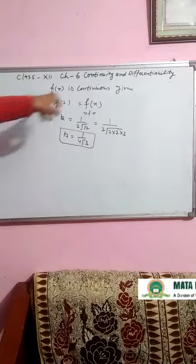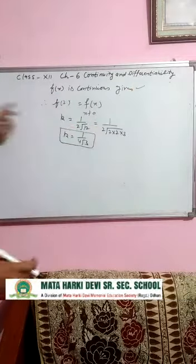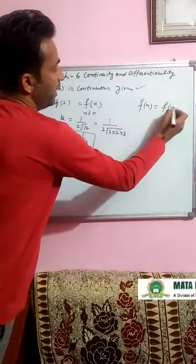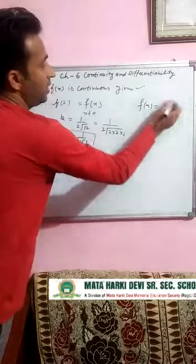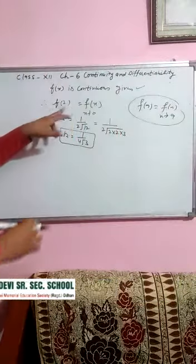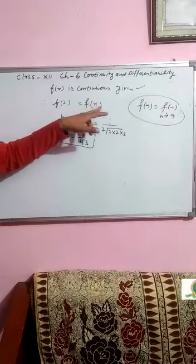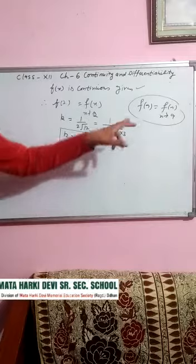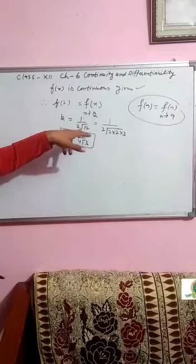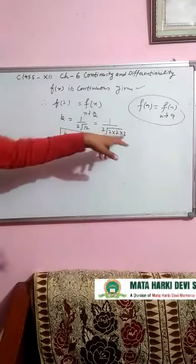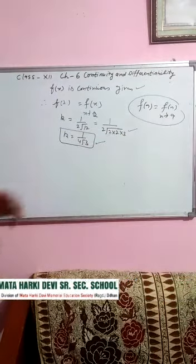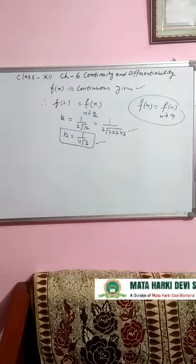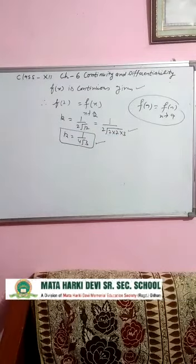Function aapka continuous given hai, toh continuity ki condition hogi: f(a) is equal to limit x tends to a of f(x). Yahan f(2) is equal to limit x tends to 2 of f(x). Toh k ki value kya hai? 1 divided by 2·root(12), jo hum likh sakte hain as 1 divided by 4·root(3). Yeh aapki k ki value aayegi.